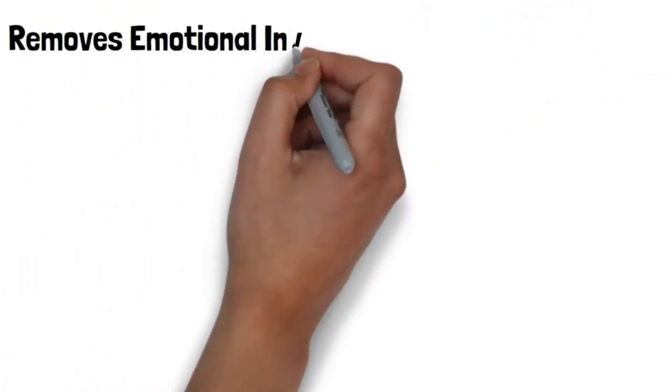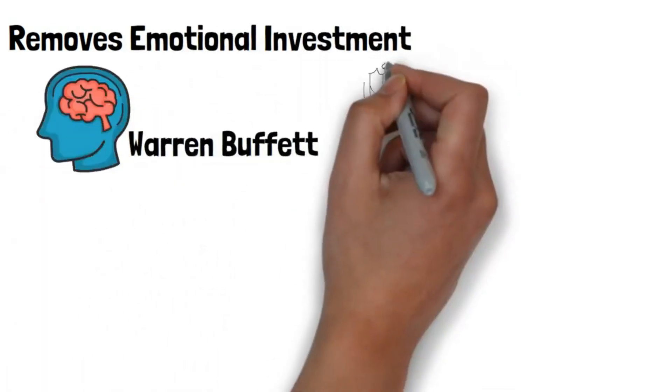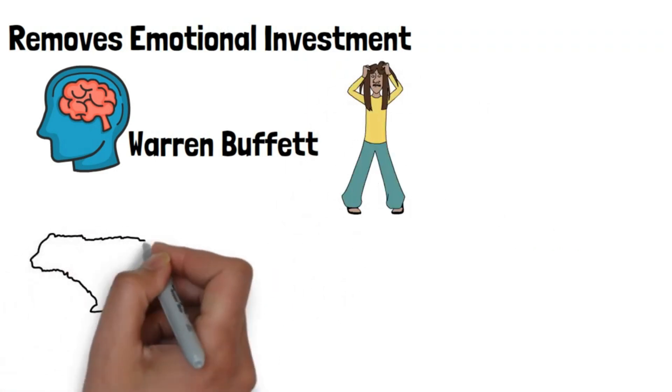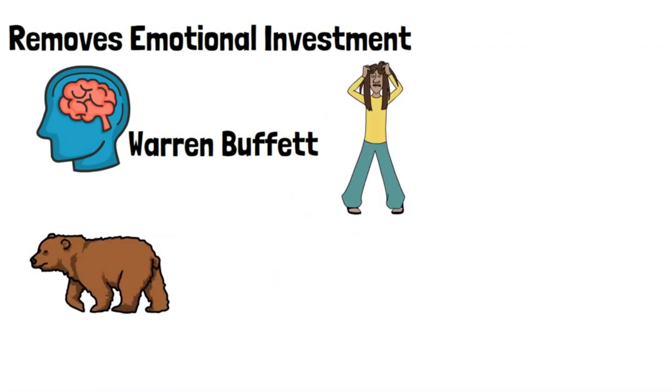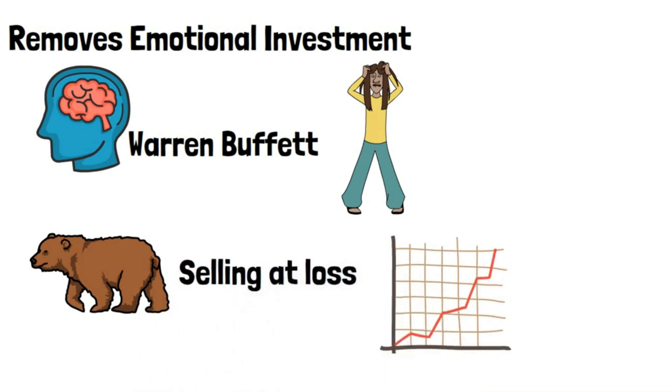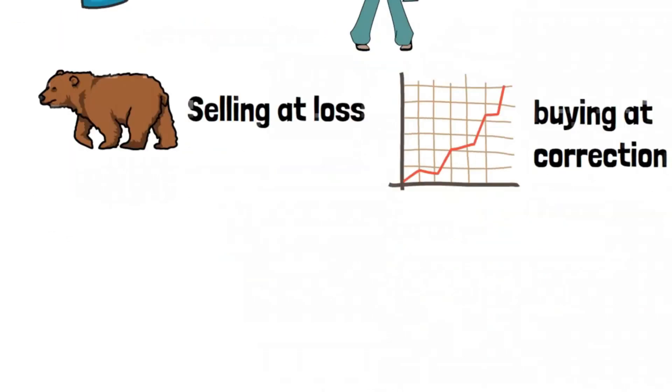Removes emotional investment. Fear and greed, according to Warren Buffett, are two emotional impediments to effective investing. Fear happens when prices are falling in bear markets, while greed happens when prices are rising in bull markets. While the former leads to individuals selling at a loss, the later leads to people buying just as the market is about to correct. This fear and greed cycle can be broken with SIP.